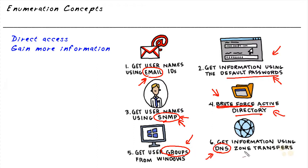If we can do a zone transfer and download the entire DNS database from a system, that's fantastic. But even if we can't download the entire database, accessing the DNS — especially an internal company DNS — is going to give us more information on the name-to-IP address mappings inside that infrastructure. These are some general techniques for enumeration.